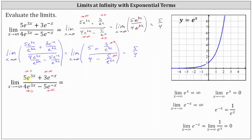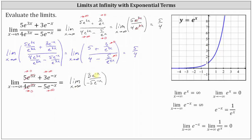First, if we know 5 times e to the power of 3x is approaching 0 as x approaches negative infinity, we can ignore that term. Similarly, we can ignore 4 times e to the power of 3x in the denominator, since that term is also approaching 0. This means the given limit equals the limit of just 3 times e to the power of negative x divided by negative 5 times e to the power of negative x, as x approaches negative infinity. We can simplify — e to the power of negative x divided by itself simplifies to 1 — leaving us with the limit of negative 3 fifths, which is equal to negative 3 fifths.